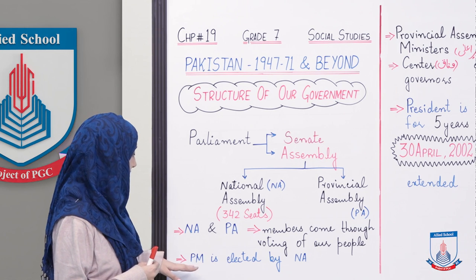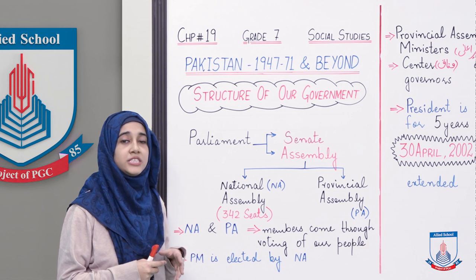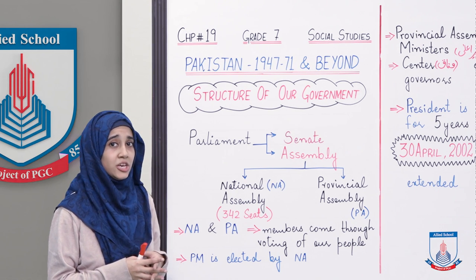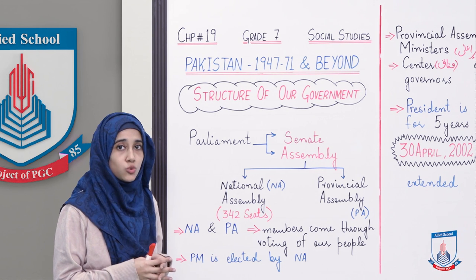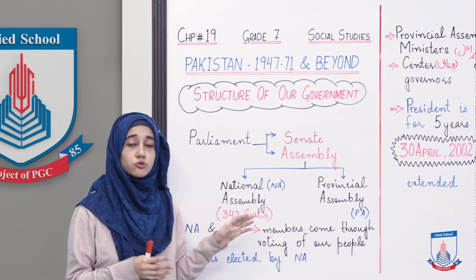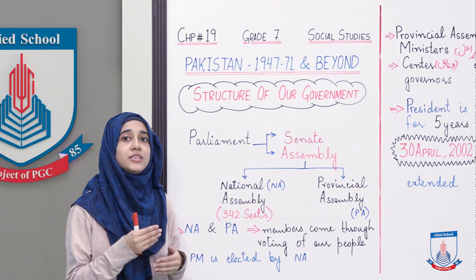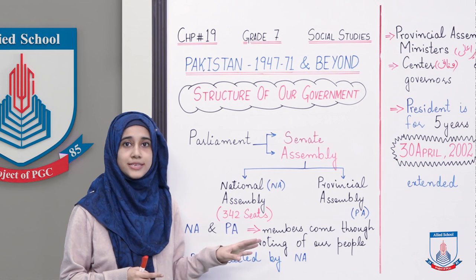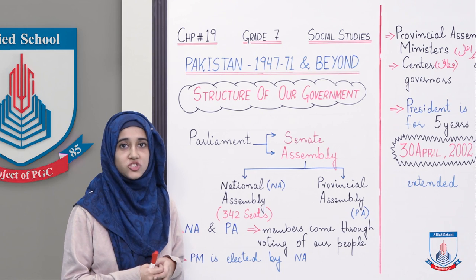Prime minister is elected by national assembly. Mein aap ko samjhaya ke agar kisi ne humara wazir-e-azam, prime minister benna hai, toh us ke liye zaroori hai ke us ke paas national assembly mein 170 se zyada seats hon. National assembly mein 342 seats hain, toh us ko 342 ke half se zyada seats chahiye, yaani ke 170 se zyada. Teen sau bayalis ka half kitna banta hai? 170. Toh agar kisi ne wazir-e-azam benna hai, toh us ko 170 se zyada seats chahiye hongi.